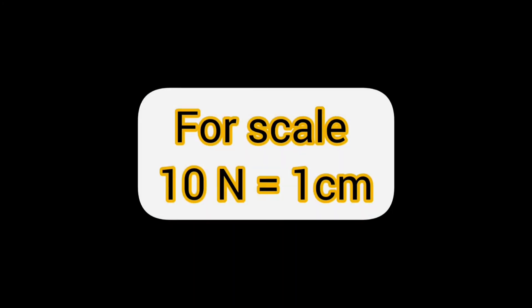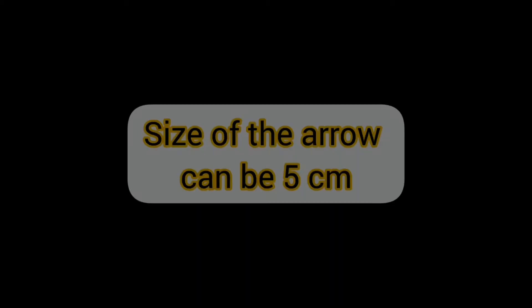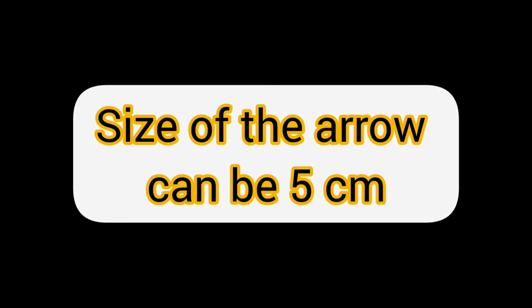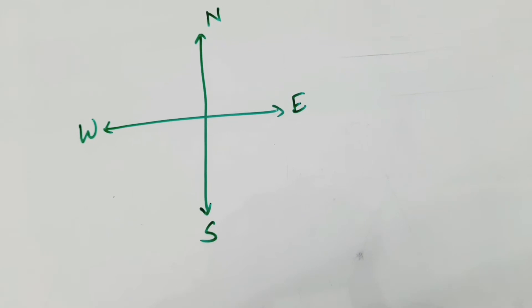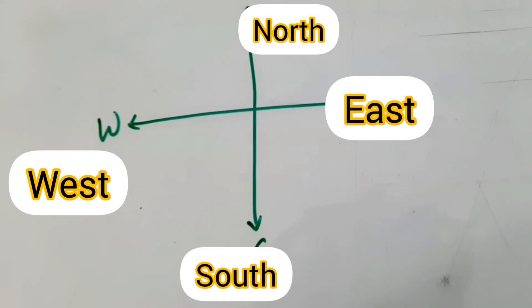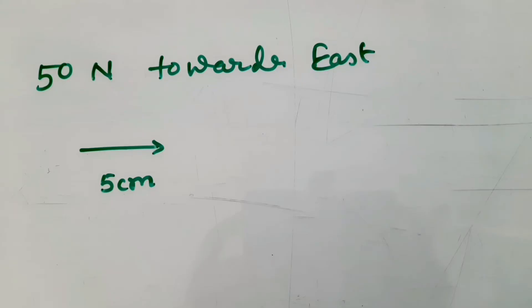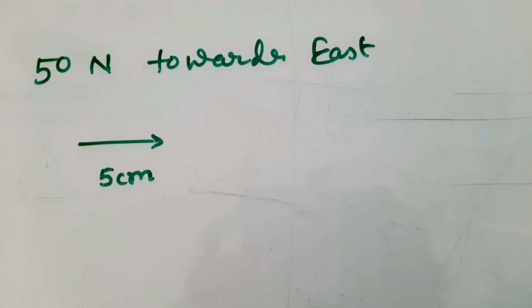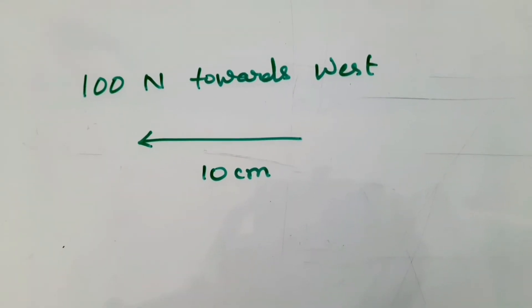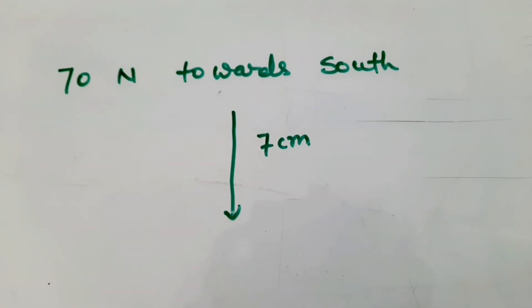In general, for scale, we assume 10 newtons equals 1 centimeter. So if you have to draw a force arrow for 50 newtons, the arrow would be 5 centimeters. The directions we use are north, south, east, and west. For example: 50 N towards east, 100 N towards west, 30 N towards north, and 70 N towards south.